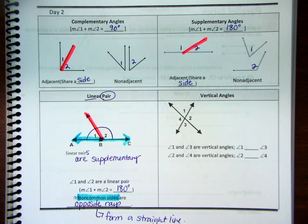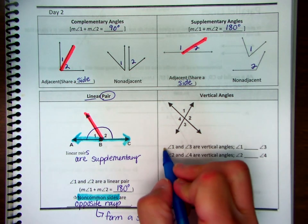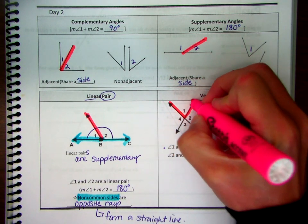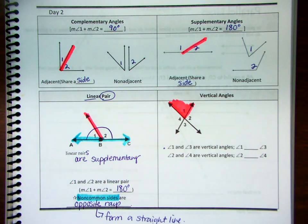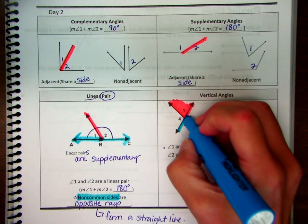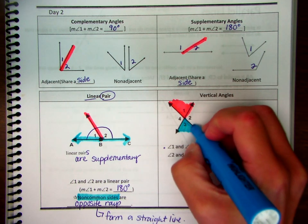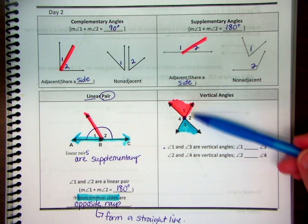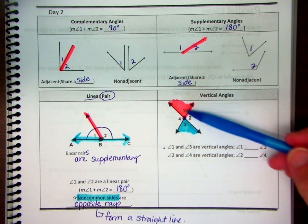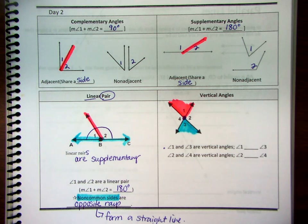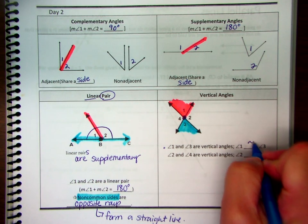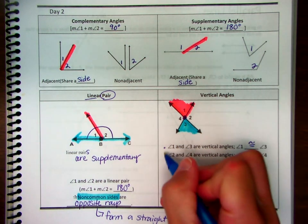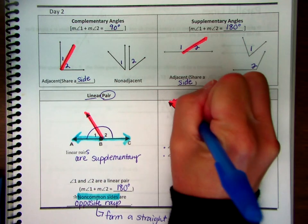The next angle pair is a vertical angle. Angles one and three are vertical angles. Vertical angles are formed by the intersection of two lines — remember, the intersection of two lines is a point. These two angles are non-adjacent, so they don't share a common side. All vertical angles are congruent, so one is congruent to three, and two is congruent to four.